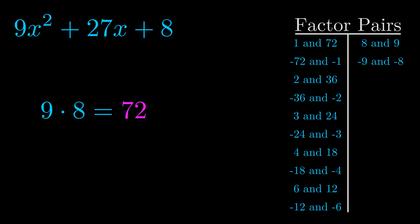The b value is the coefficient on the x term. That's the middle term, the one that we haven't done anything with yet. And really this is the only factor pair that we need.